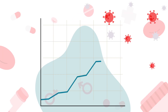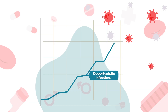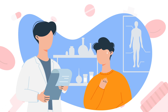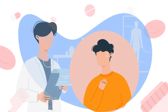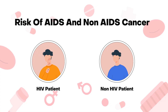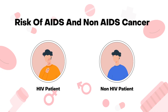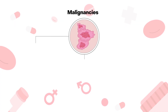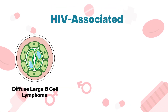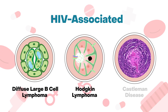The end result is alarmingly high rates of opportunistic infections and malignancies. Hematologists and oncologists often see HIV patients in their practice. Despite the use of ART, the risk of AIDS and non-AIDS defining cancers among HIV-infected patients is approximately double that of their HIV-uninfected counterparts. In the ART era, these malignancies represent the leading cause of death in patients living with HIV, and include HIV-associated diffuse large B-cell lymphoma, Hodgkin lymphoma, and Castleman disease.